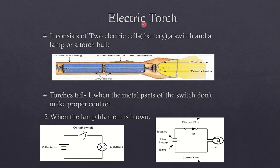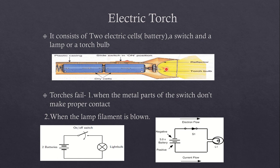Electric torch — what is an electric torch? An electric torch consists of two electric cells that form a battery, a switch, and a lamp or torch bulb. Here is a reflector that helps to reflect the torch bulb's light. There is also a metal spring and a plastic coating. So, an electric torch consists of two electric cells, a switch, and a lamp or a torch bulb.